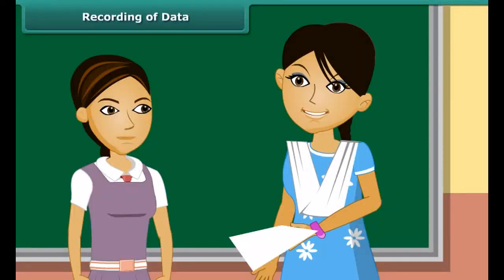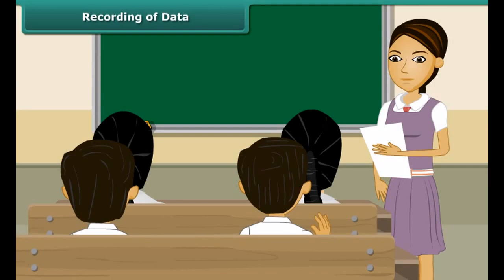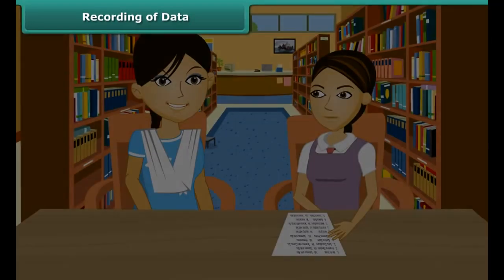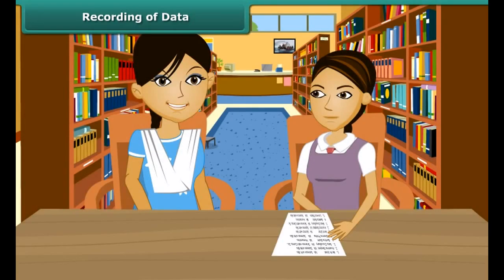Recording of data: Mrs. Sandeep is the academic in charge. She has assigned Sheetal the task of writing the stream preference of all class 10 students. Sheetal collects all requisite details, summarizes them in a single sheet, places it in a file, and hands the file over to the academic in charge. The process of listing information collected from different sources is called recording of data.